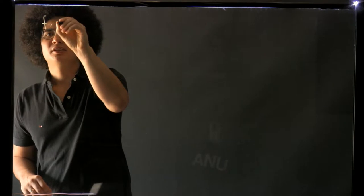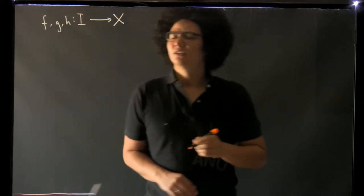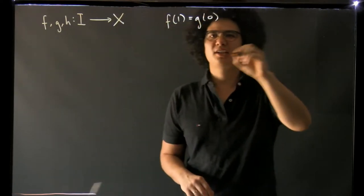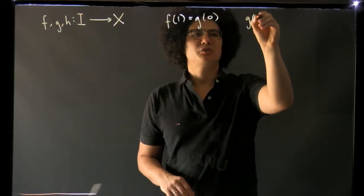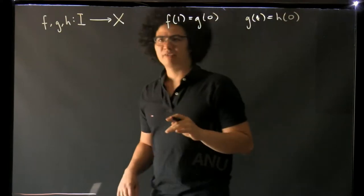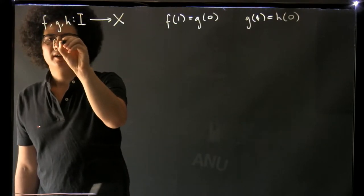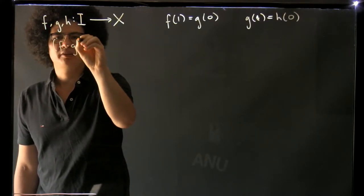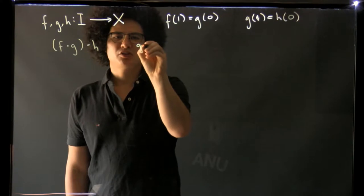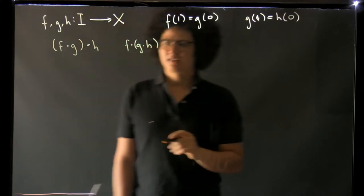Say we take some paths f, g and h in our space x, and we have that f of 1 is g of 0 so that we can compose f and g, and that g of 1 is h of 0 so we can compose g and h. Now we can form a composition f composed with g - that's a new path so we can compose it with h to get another new path. Alternatively we can compose g with h and then compose with f and that gets us another path.